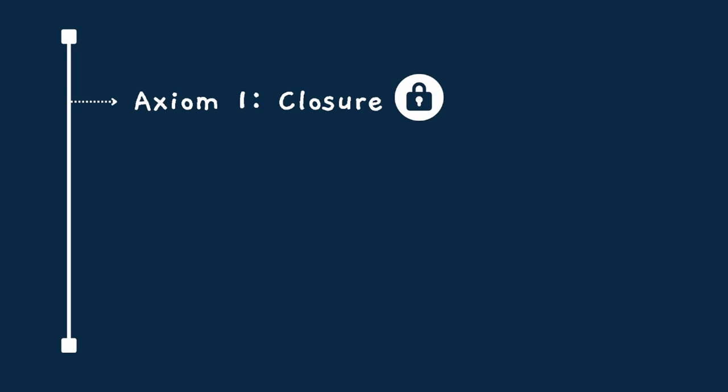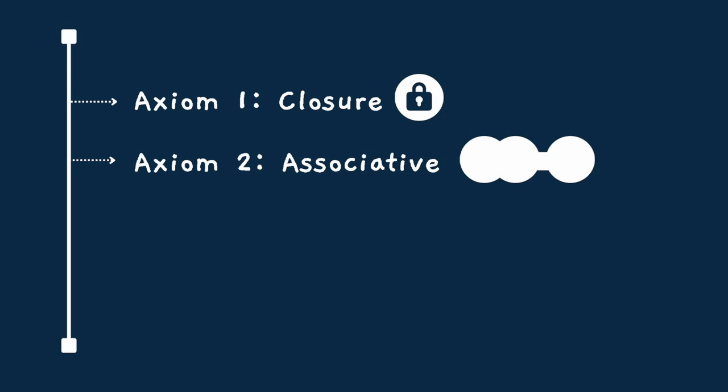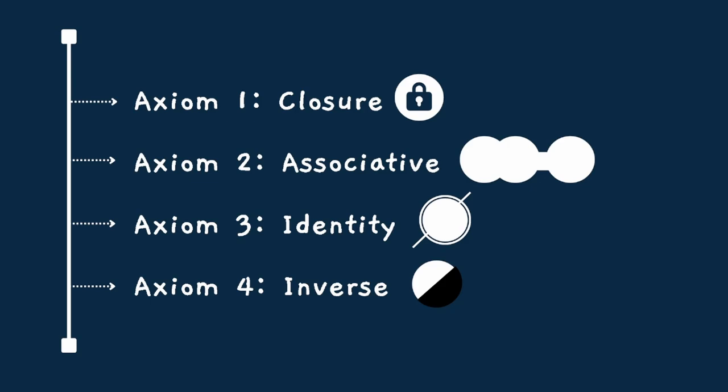Now we have reached the endpoint of the discussion. Let us review what we have learned in group theory. Group theory is a set of elements defined with an operation that integrates two of its elements to form a new element. The four axioms of group theory are: Axiom 1 - closure, which states that the set of operations are restricted to the group of elements. Axiom 2 - associative, which states that wherever you put the parentheses in the operation, it produces the same result. Axiom 3 - identity, which states that an element applied to an identity would remain the same. And Axiom 4 - inverse, which states that every element has its inverse.